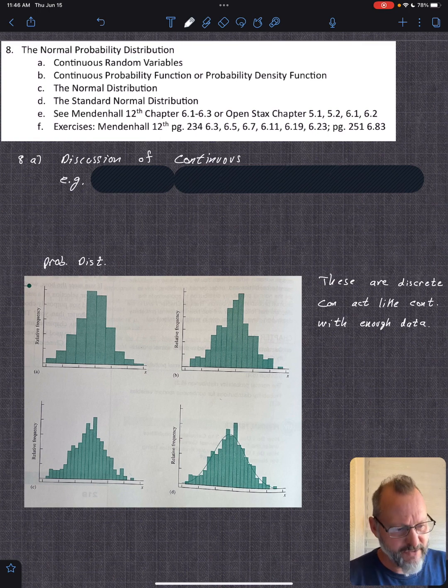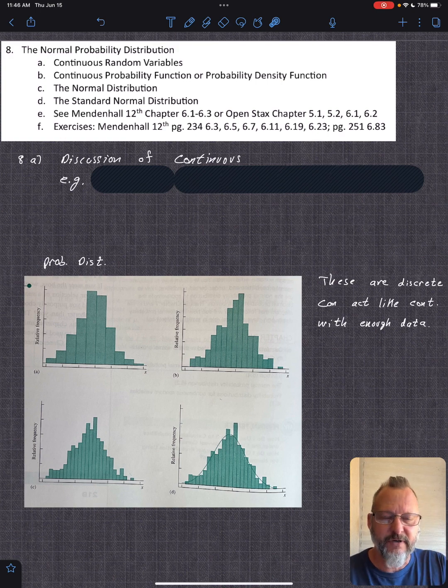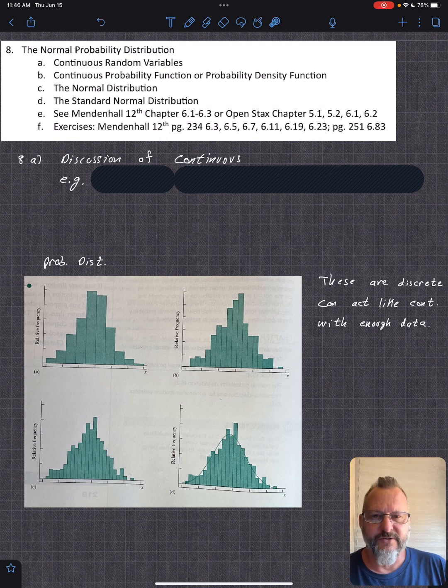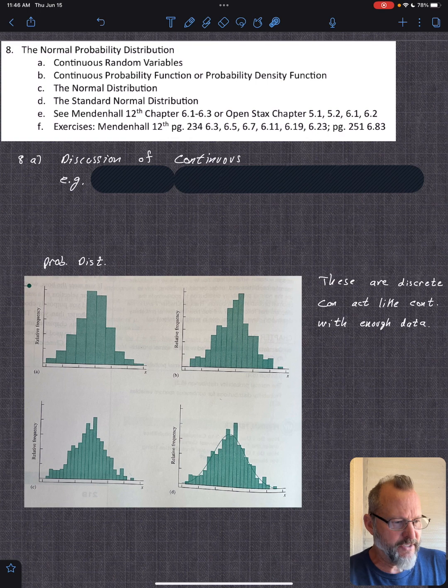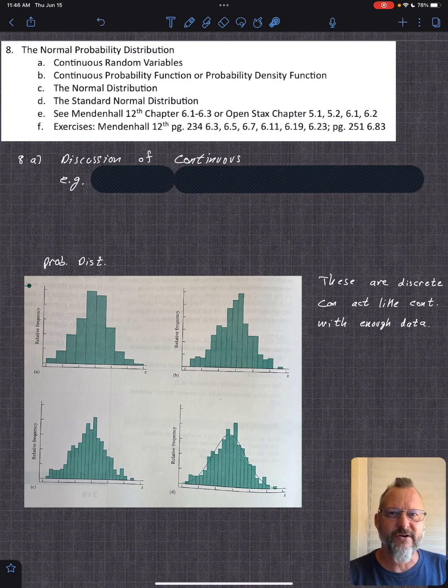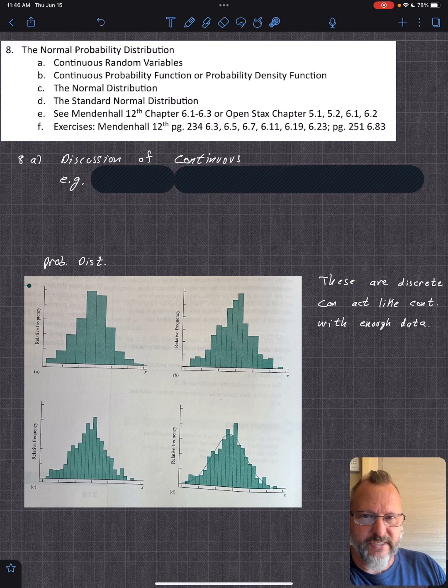First let's talk about continuous random variables. We started with discrete, so we're talking about individual events. That's usually good for individual events that are discrete, but it's also good for smaller samples - you're talking hundreds, not thousands or millions. Once you get up to millions of samples, things start behaving like something that's continuous anyway, so you can use these distributions.